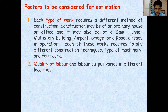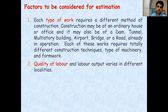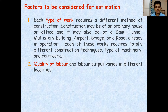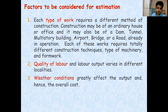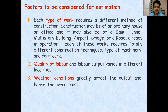Point number two is the quality of labor required. Some works may require skilled laborers and some may not require that level of skill. Skilled labor will cost more, while unskilled labor wages will be lower.